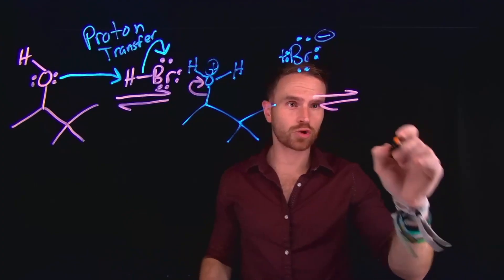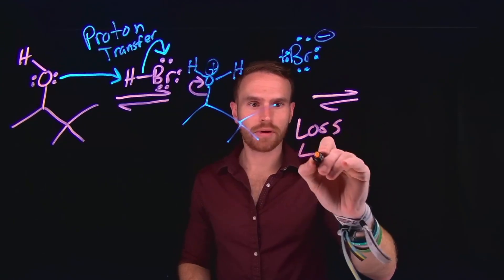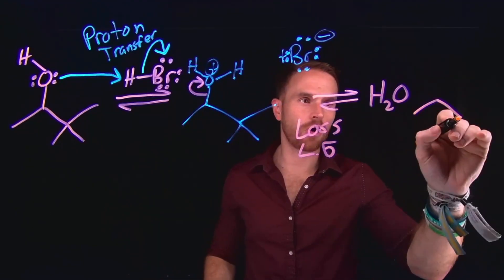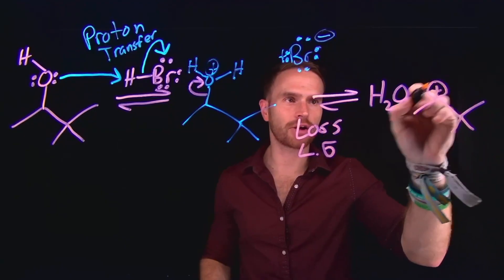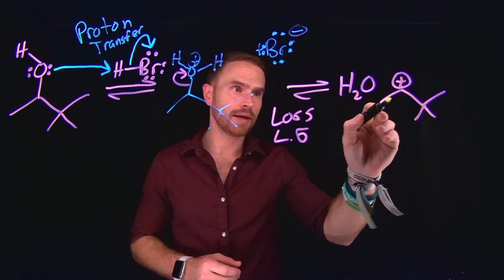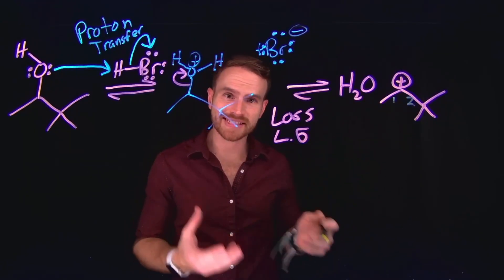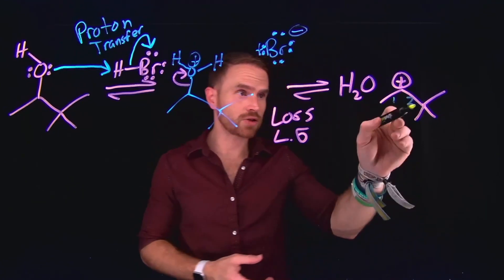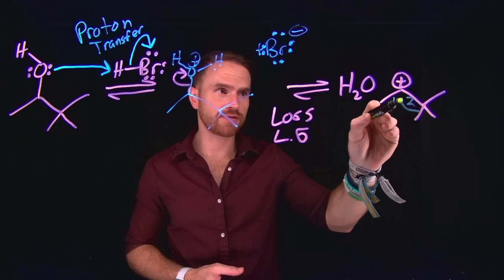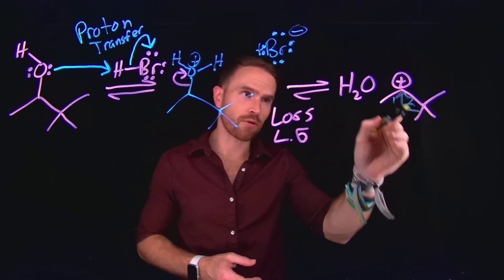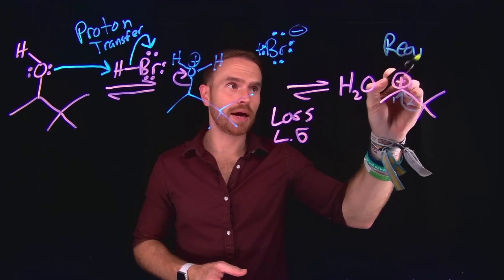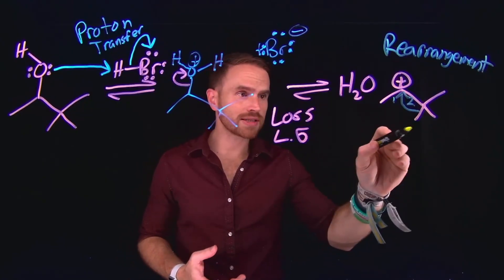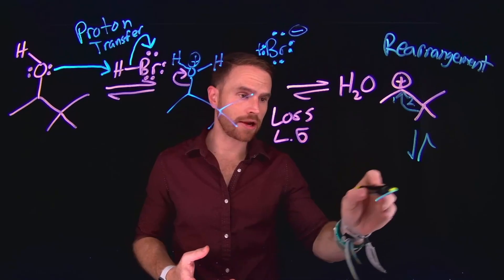We've created a good leaving group. The next step is the loss of a leaving group where the electrons at this position move to be exclusively on the oxygen atom, kicking off a water molecule as neutral H2O. This leaves behind a vacancy of electrons at the carbon position — a carbocation. This carbocation is attached to two alkyl groups, making it a secondary carbocation. We can produce a more stable carbocation by undergoing a methyl shift, where these electrons shift over to this position, moving the methyl group. This is called a rearrangement.